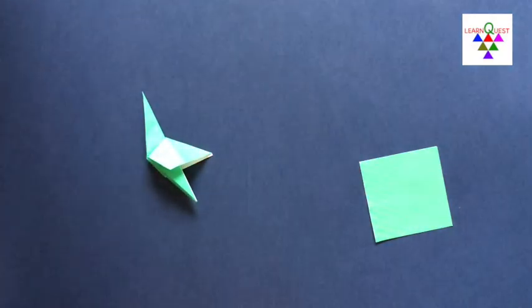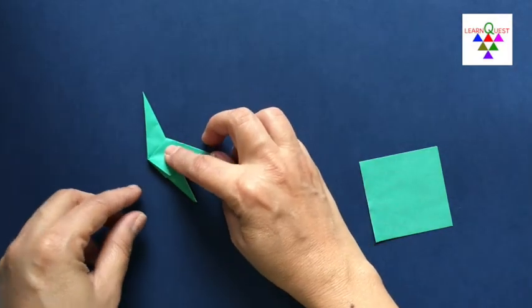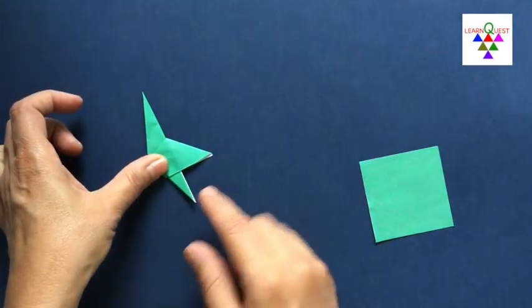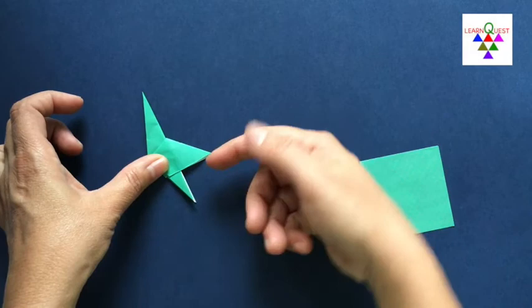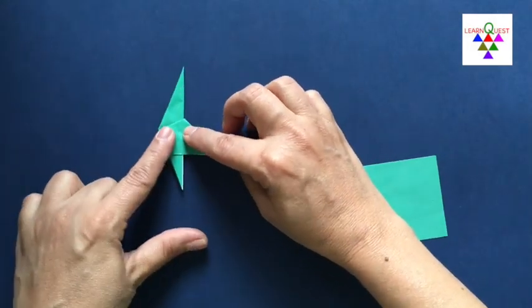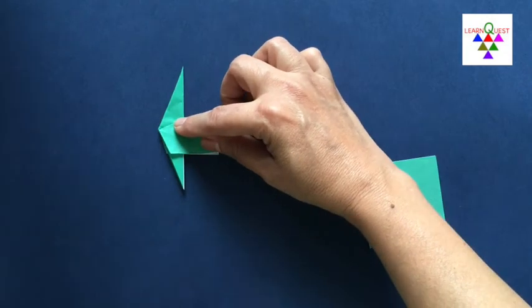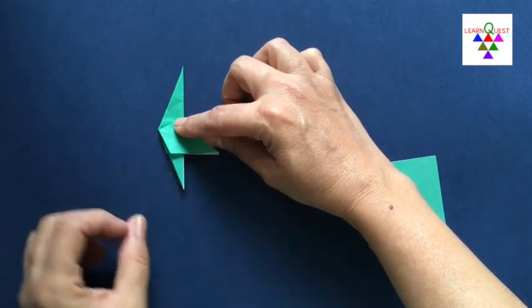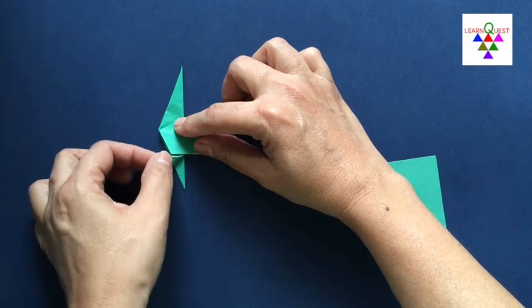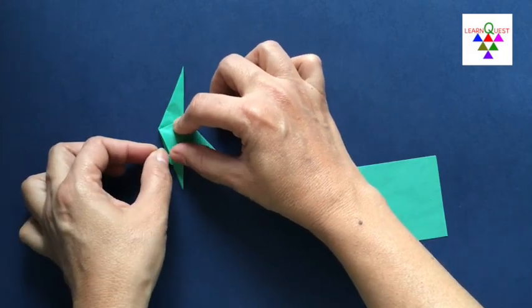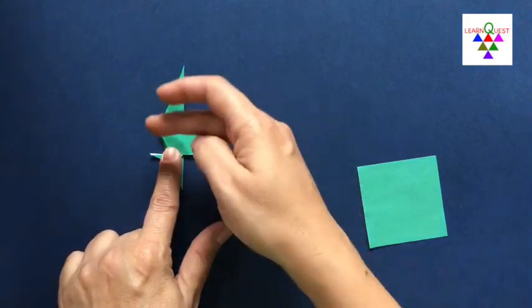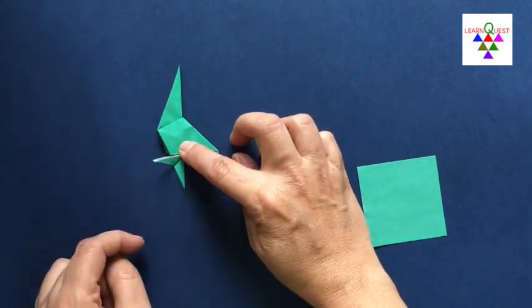Now there are just two steps. Let's complete them fast. Now we are going to take this triangle and we are going to fold it. Hold the model like this so that this is horizontal. You're going to take this and fold it like this towards the shorter edge of the kite.